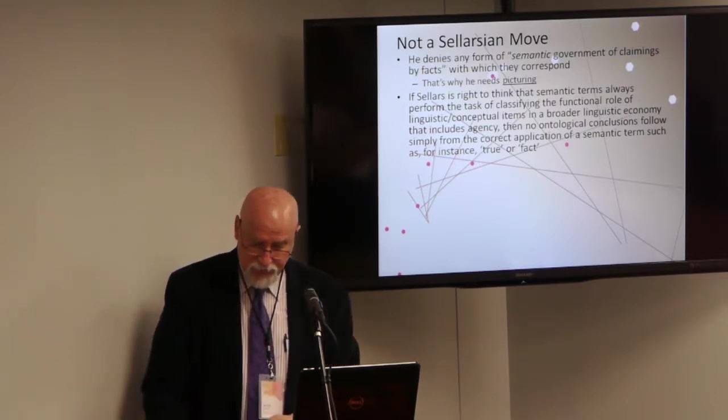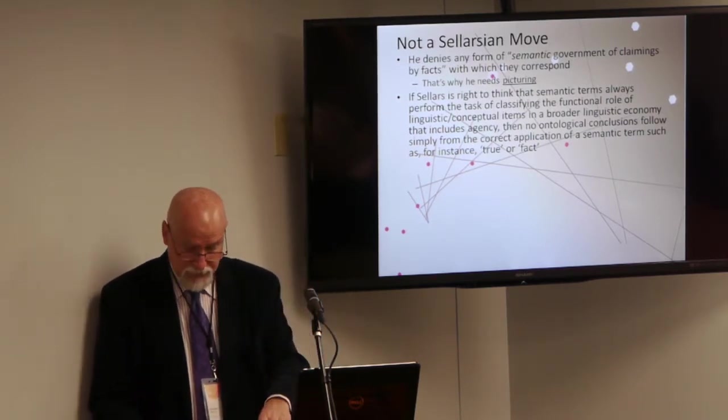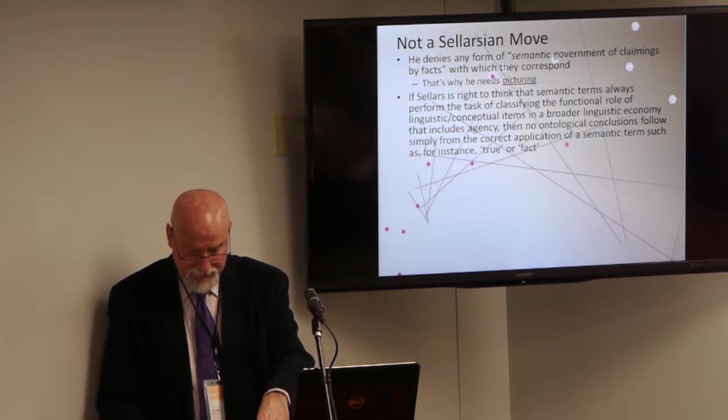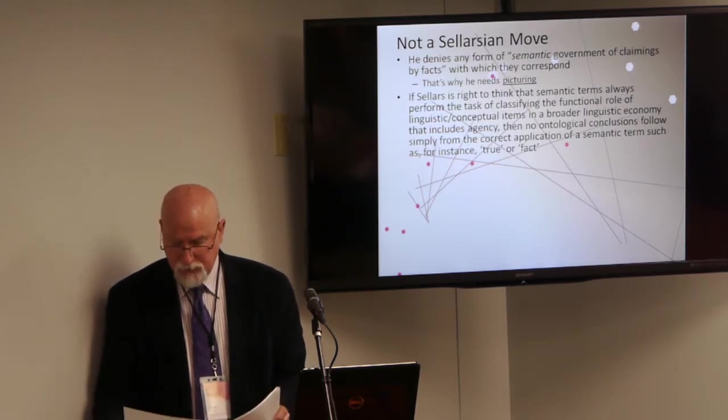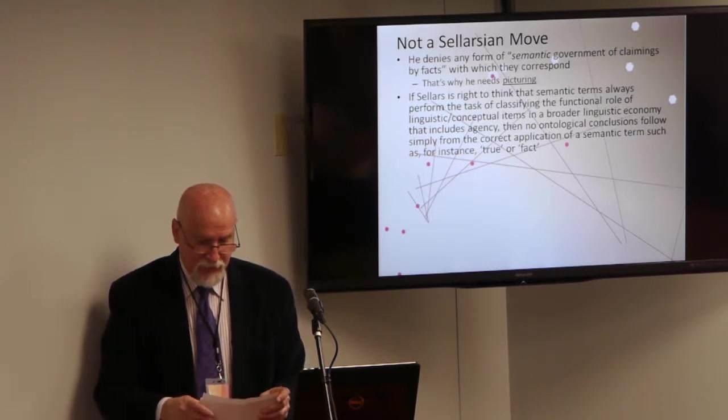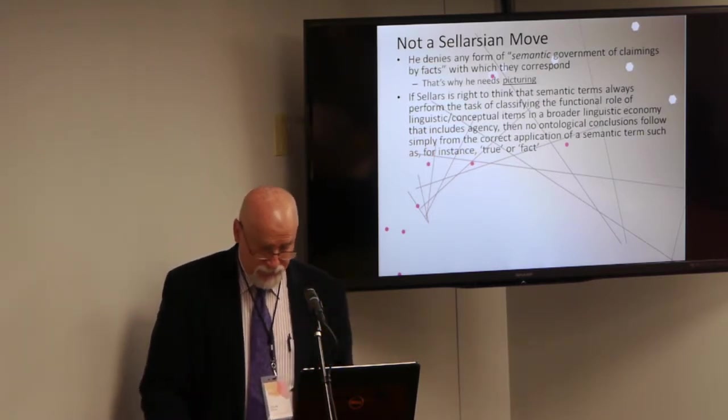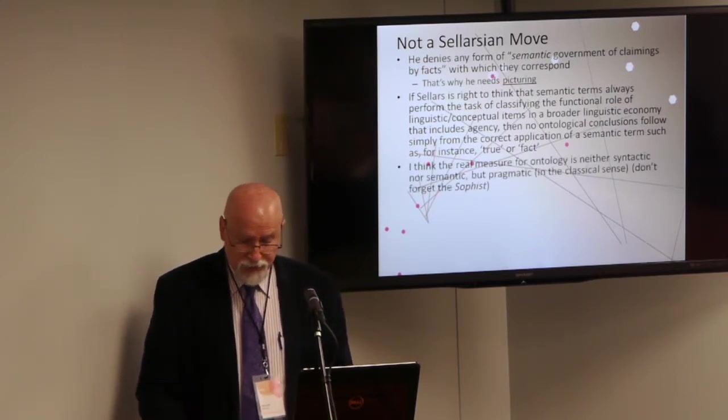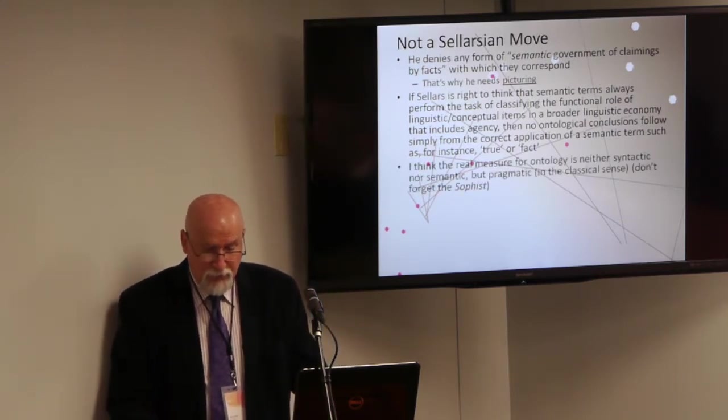There is a long, but I think unfortunate, history of trying to establish a criterion in ontology that would be either simply syntactic, such as being a proper or maybe a logically proper name, or semantic, such as being the value of a variable of quantification. But, quite frankly, I think all such attempts are doomed to failure. The real measure for ontology is not to be found in either syntax or semantics. It is indeed pragmatic, and not in the thin linguistic sense of pragmatic.